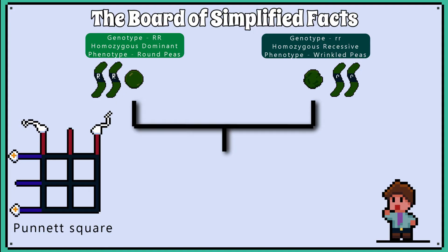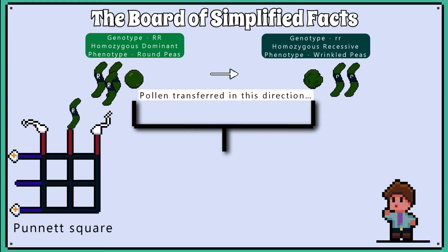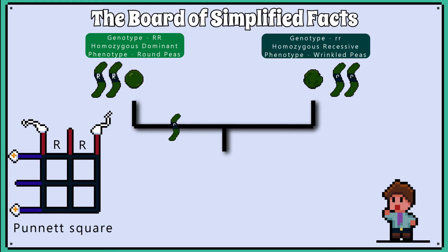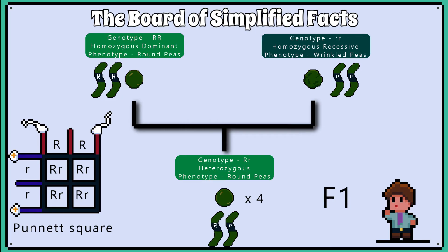Now using a Punnett square, we can show all of these crosses. Originally we had a homozygous dominant round pea plant crossed with a homozygous recessive wrinkled pea plant. When these produce gametes, they halve the number of chromosomes during meiosis. The columns represent the male gametes and the alleles they contain, and the rows of the table represent the female gametes and the alleles they contain. From the round pea plant, one dominant allele goes into one column and the other dominant allele goes into the other column. From the wrinkled plant, one recessive allele goes into one row and the other recessive allele goes into the other row. When we cross all these alleles, all the F1 offspring are heterozygous, containing one dominant allele and one recessive allele.